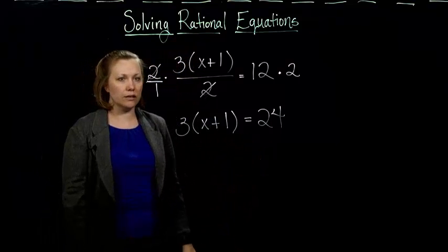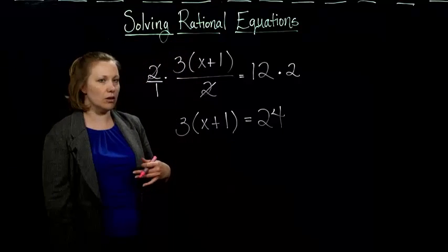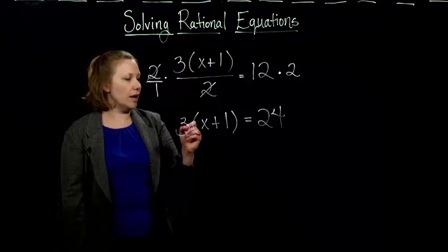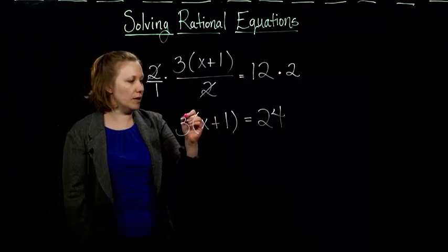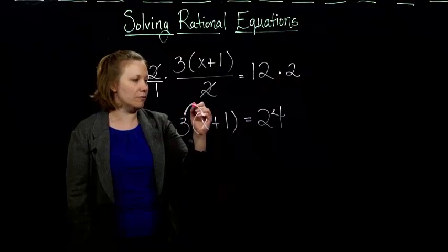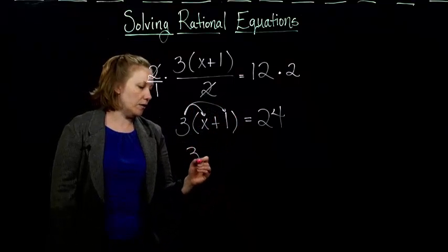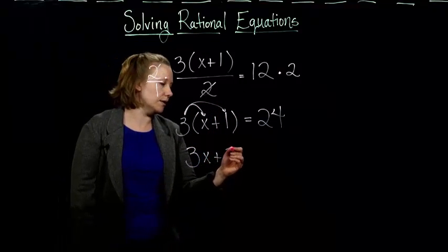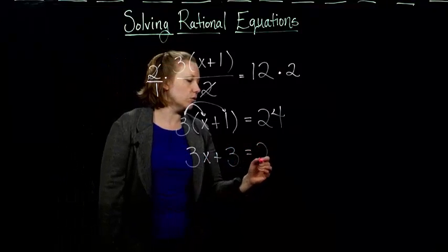And now this is just the same kind of equation that we were solving in the last section. So we have to get rid of these parentheses. So we know we can use that distributive property of numbers and distribute the 3. So we get 3x plus 3 equals 24.